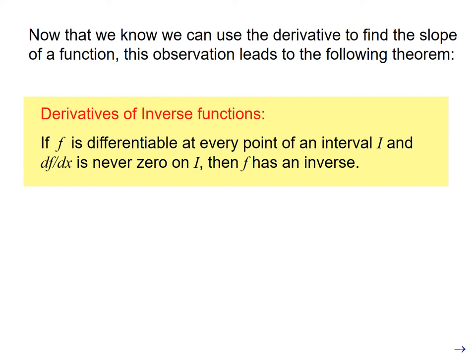And this makes sense because if there is not an inverse, somewhere it has to change direction. And if it changes direction, the derivative would be 0.